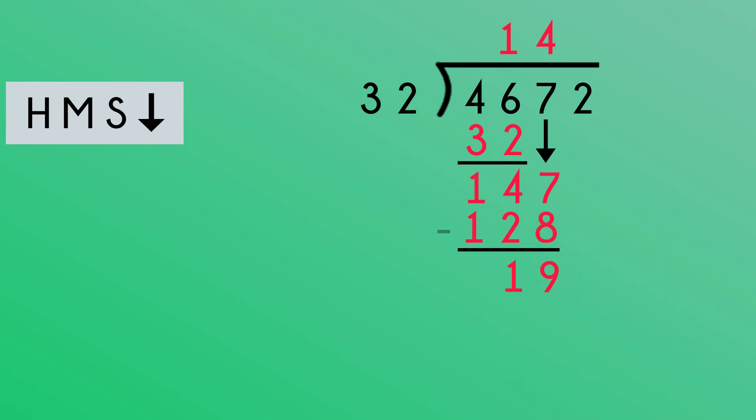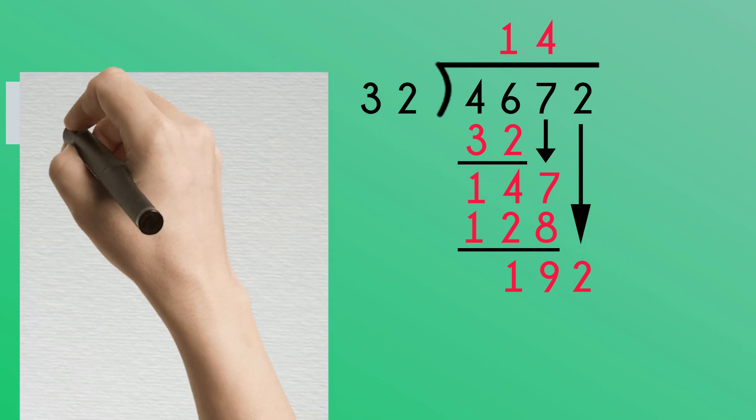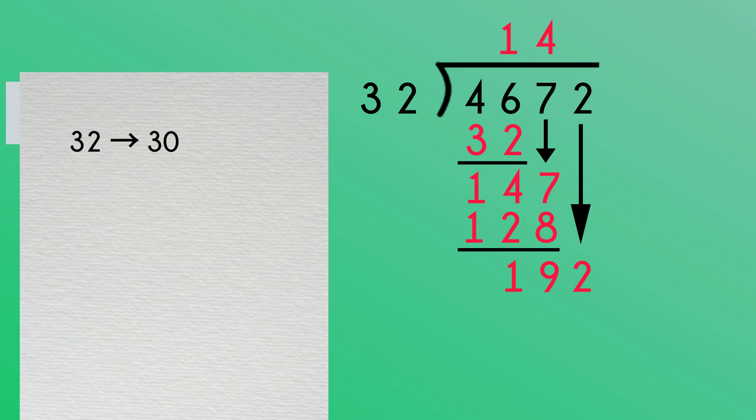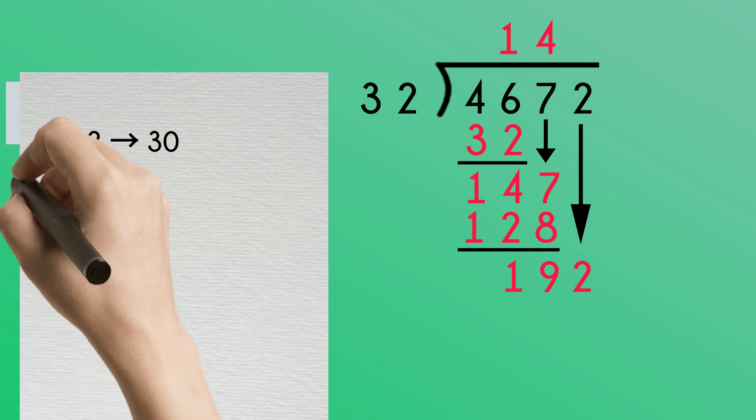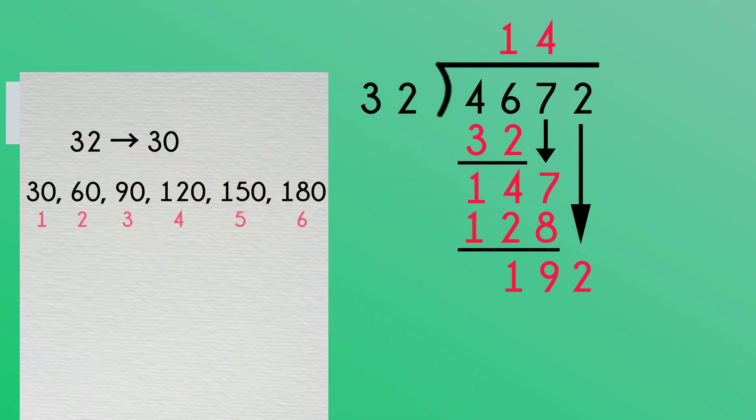Now we bring down the 2. How many 32s fit into 192? To help with this calculation, let's round 32 to 30. This is because it's easier to count in groups of 30 than in groups of 32. It looks like it will fit 6 times.